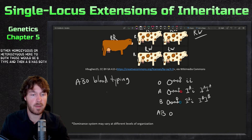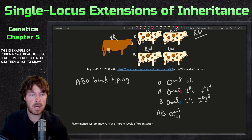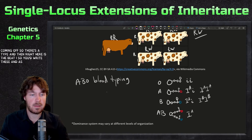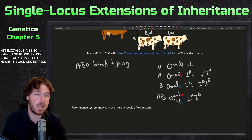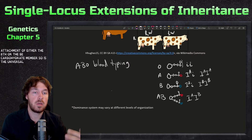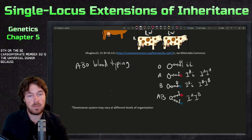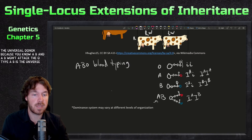AB type has both carbohydrates coming off — this is the example of codominance. There's the A type carbohydrate and the B type carbohydrate both present. AB is written as the heterozygous I^A I^B. O type just means it lacks the enzyme that allows attachment of either the A or the B carbohydrate.